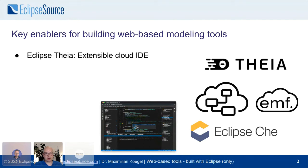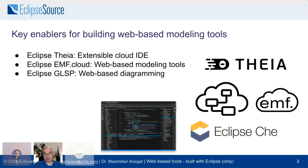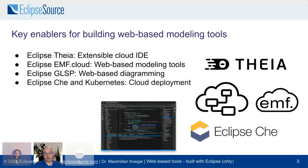First and foremost, there is Eclipse Theia — an extensible cloud IDE. You can think of it as Eclipse RCP, but for web-based tools. Then, if you are thinking about modeling tools rather than pure textual tools, there is emf.cloud, which provides something similar to EMF but for the web. Then Eclipse GLSP, which is about web-based diagramming — diagrams and graphs are often found in those tools. And finally, Eclipse Che and Kubernetes, which are about deploying those tools into the cloud. These are key enablers that have made it a lot cheaper to create these kinds of tools.